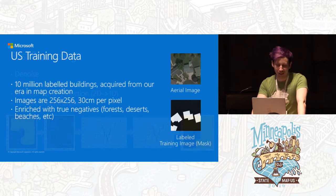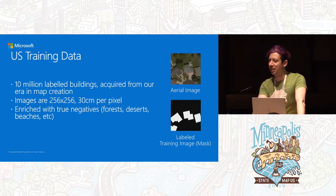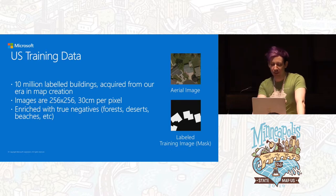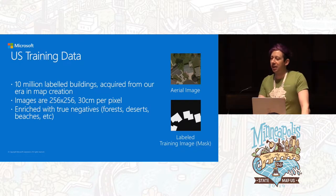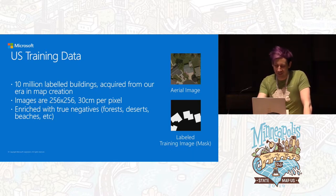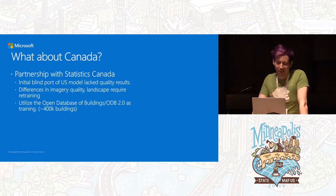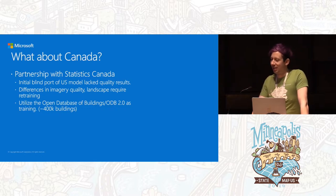To do all this, you need training data. Back before I joined the maps team, Microsoft attempted to build its own maps, so we had a whole bunch of labeled building data that served as an excellent seed. We matched it up with the imagery and used that as our training baseline. That worked great for the U.S. Then the Canada question came up, and we ran a partnership with Statistics Canada, because simply porting a model that works somewhere doesn't guarantee it will behave appropriately in a new location.